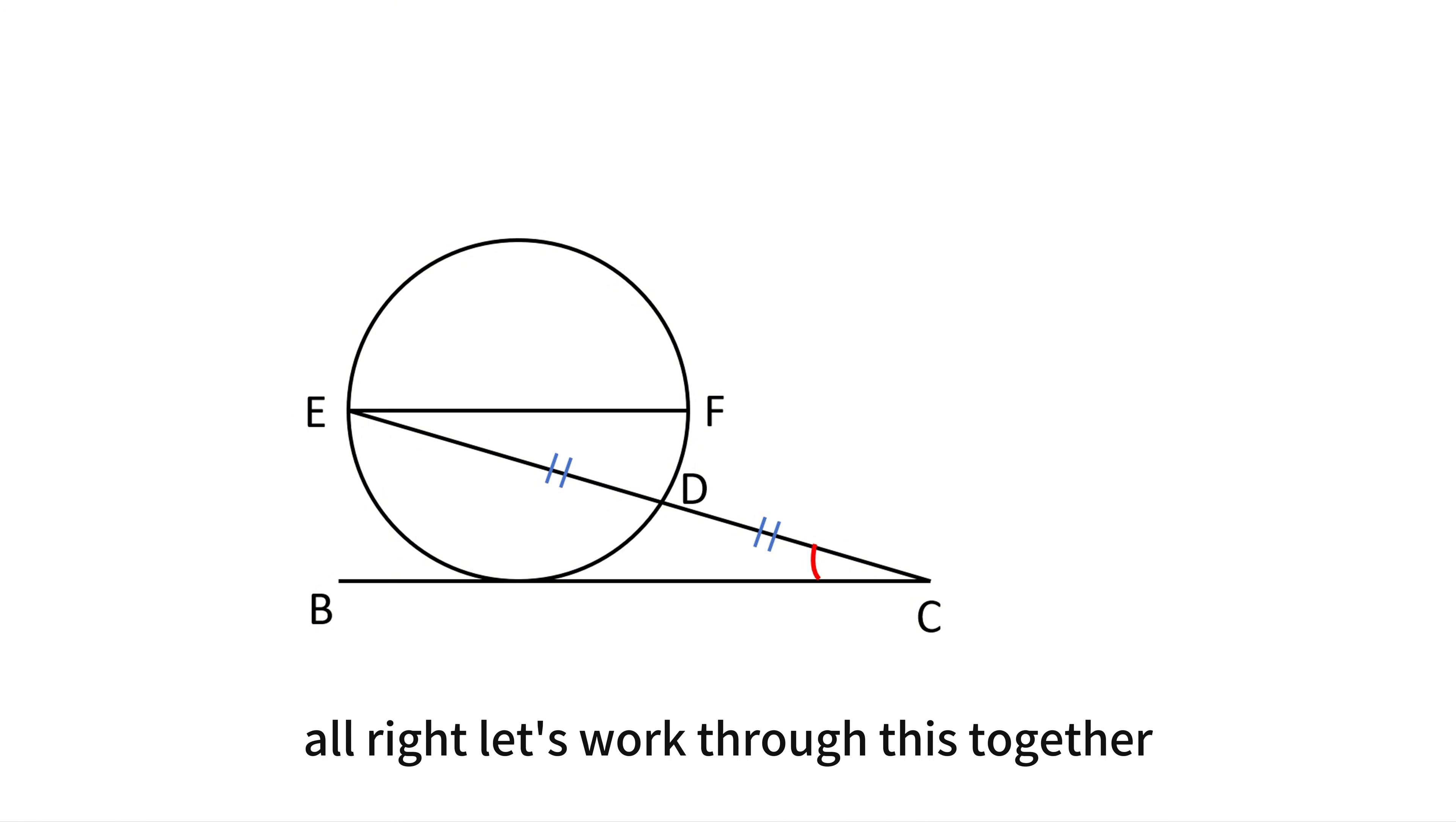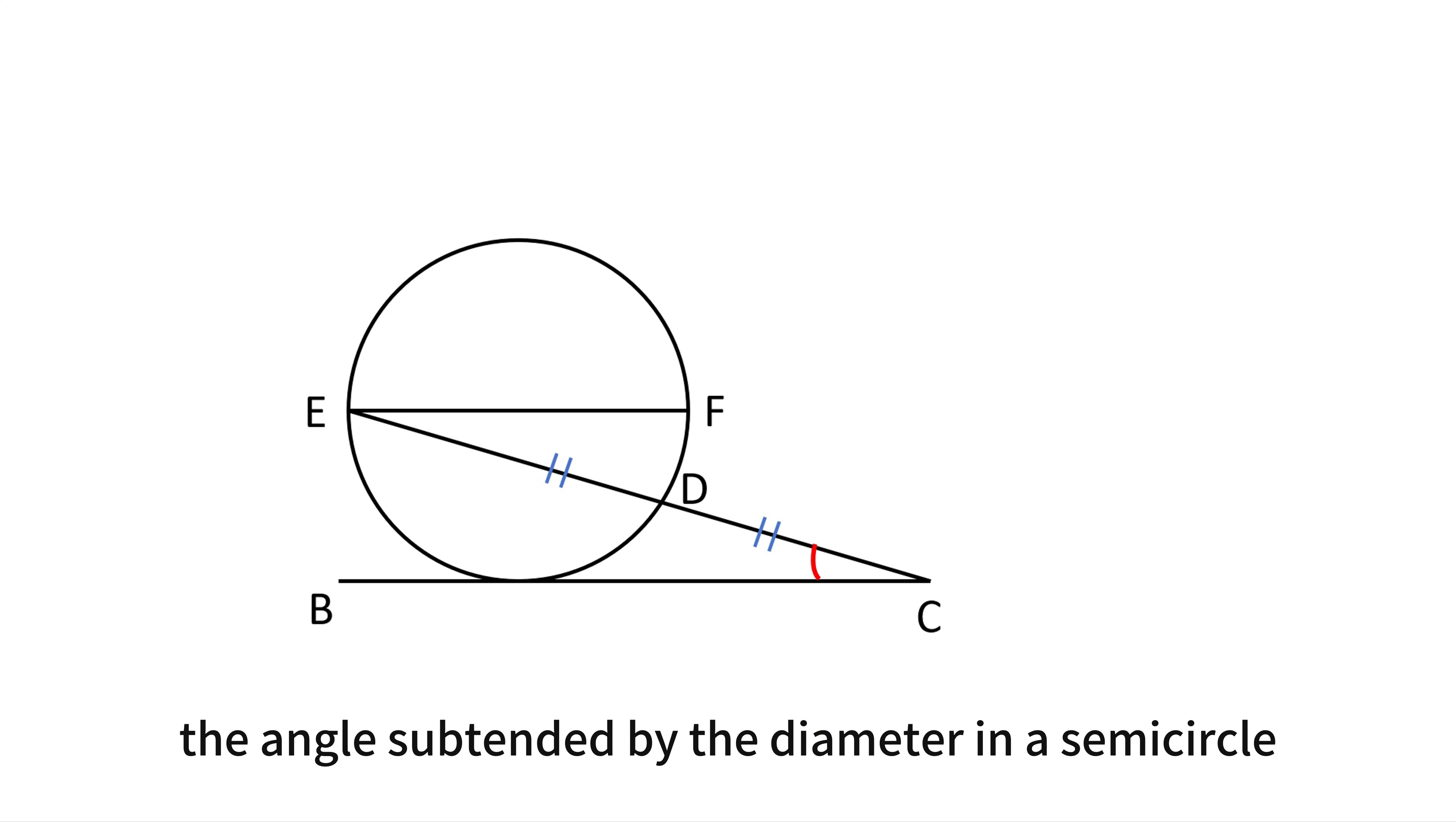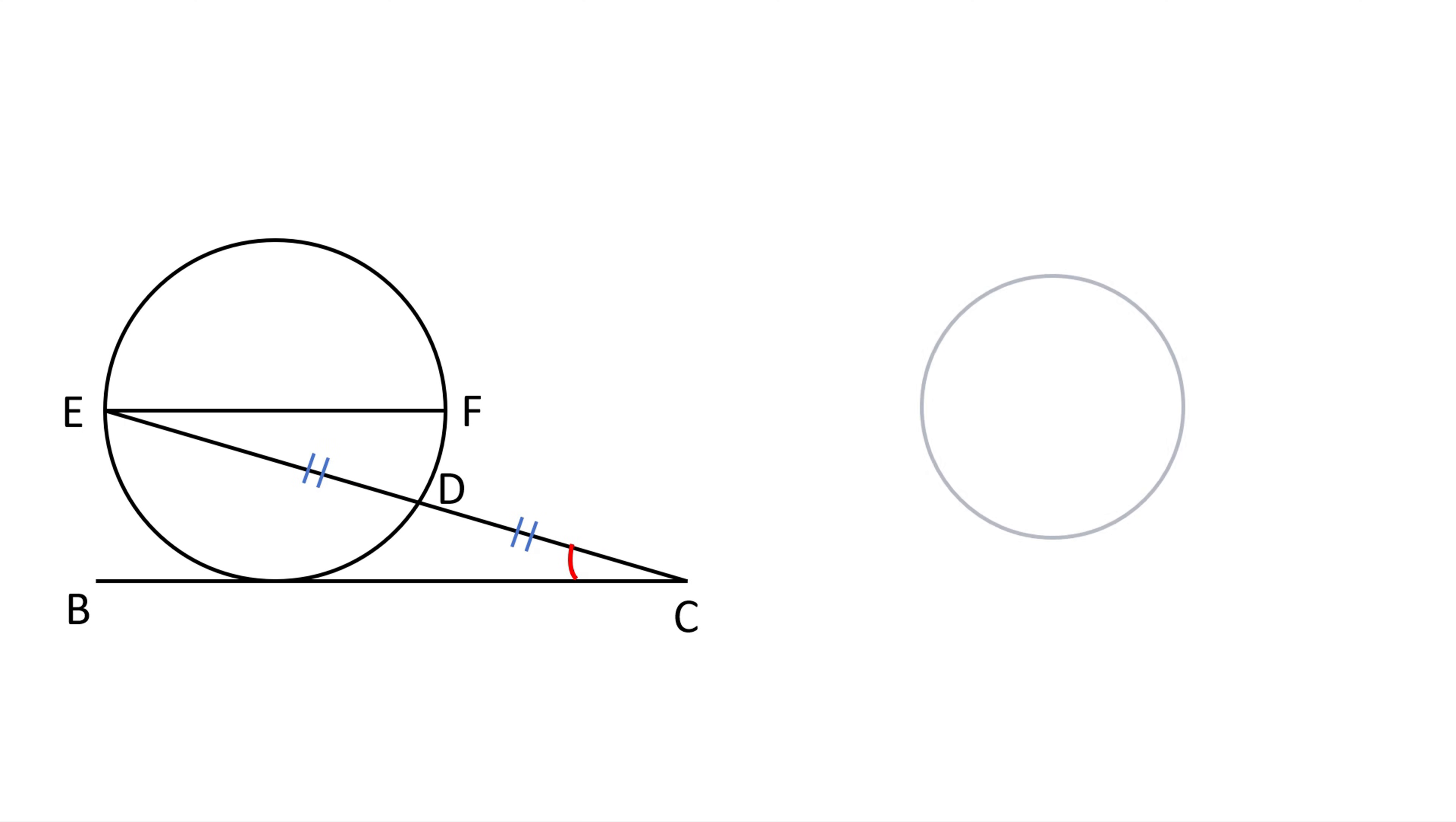Alright, let's work through this together. We know that since EF is the diameter, the angle subtended by the diameter in a semicircle is always 90 degrees. For example, if AB were a diameter and P any point on the circle, angle APB would be 90 degrees.